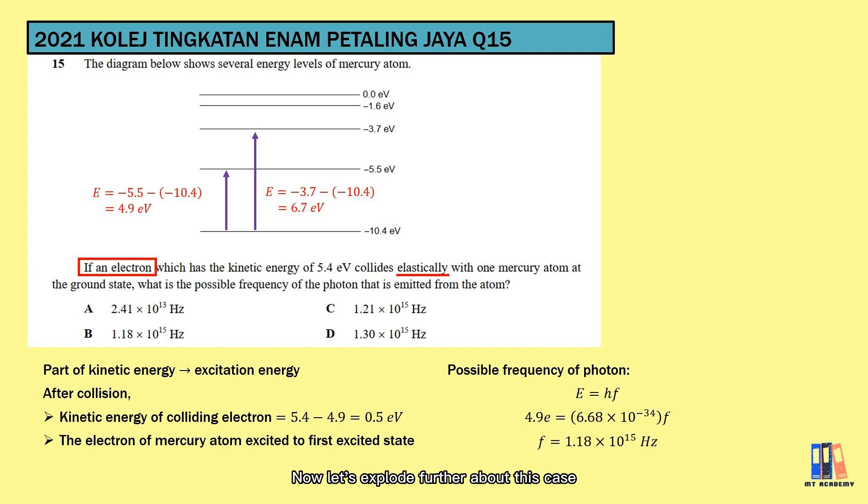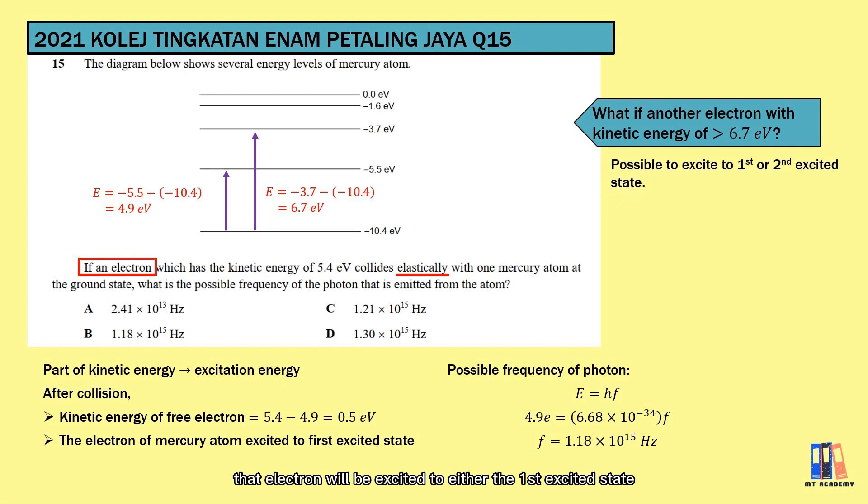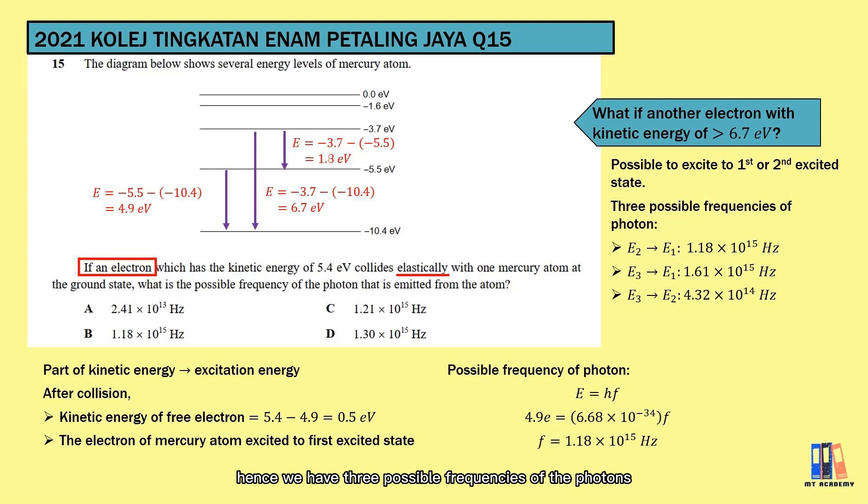Now, let's explore further about this case. What if we have another electron with kinetic energy more than 6.7 eV, let's say 7 eV? So there will be two possibilities that the electron will excite to either the first excited state or second excited state. These are two possible cases which bring us three possible frequencies of photon. First is when the electron is excited to first excited state, which is the same as what we have discussed. Second is when the electron is excited to second excited state, so the electron might drop to ground state directly, or it may drop to the first excited state first before the ground state. Hence, we have three possible frequencies of the photon if the kinetic energy is about 7 eV in this case.